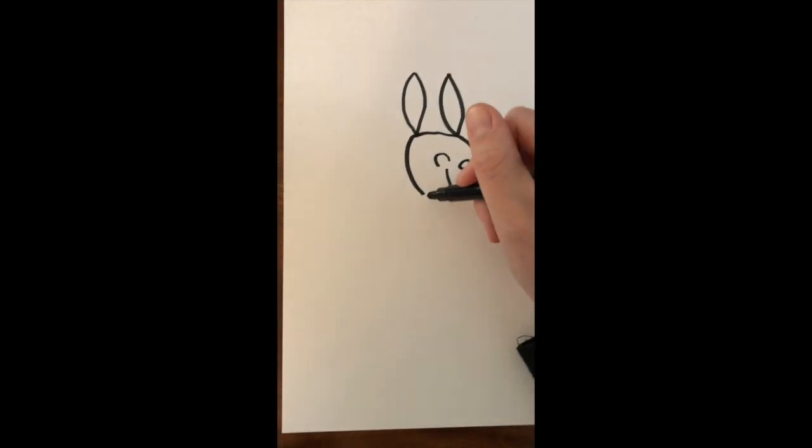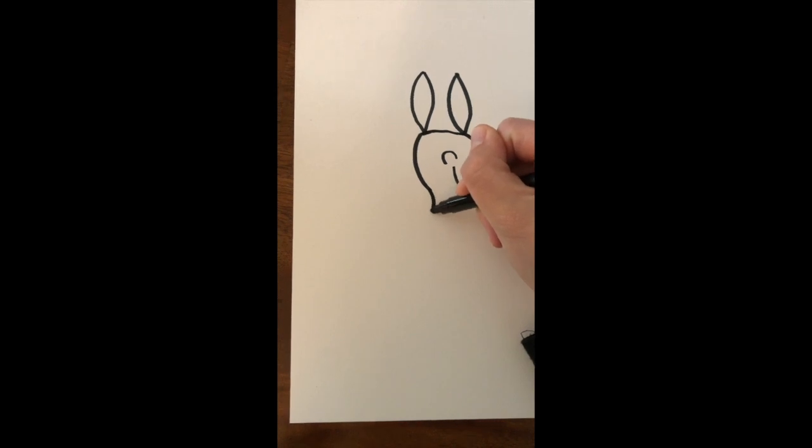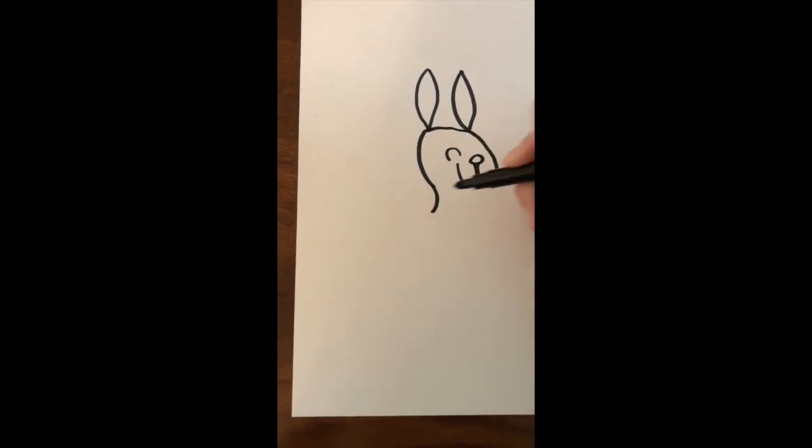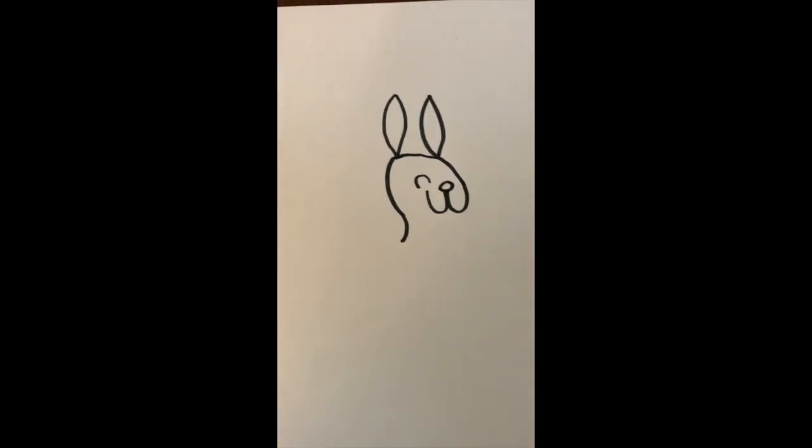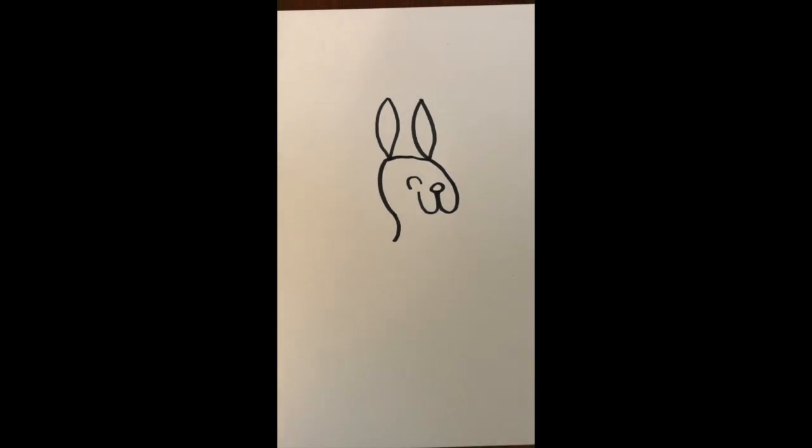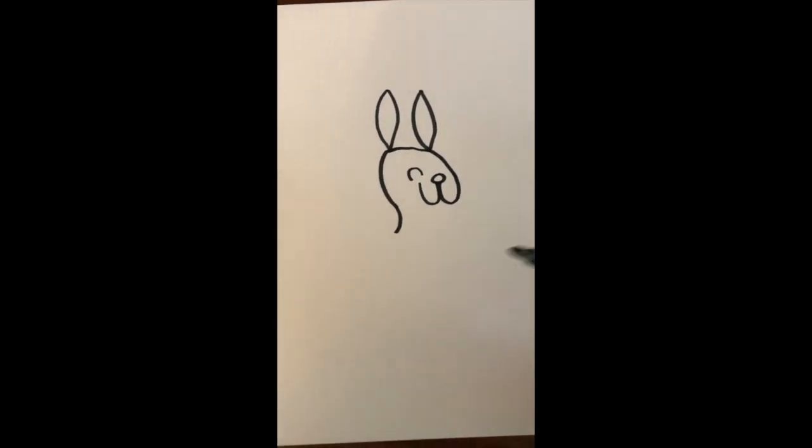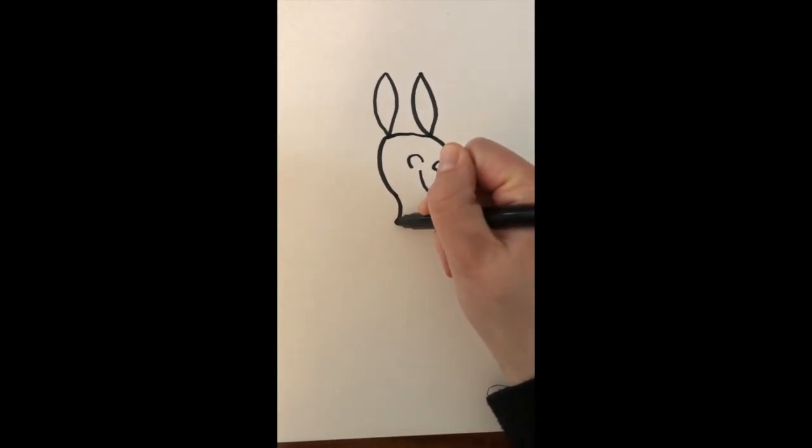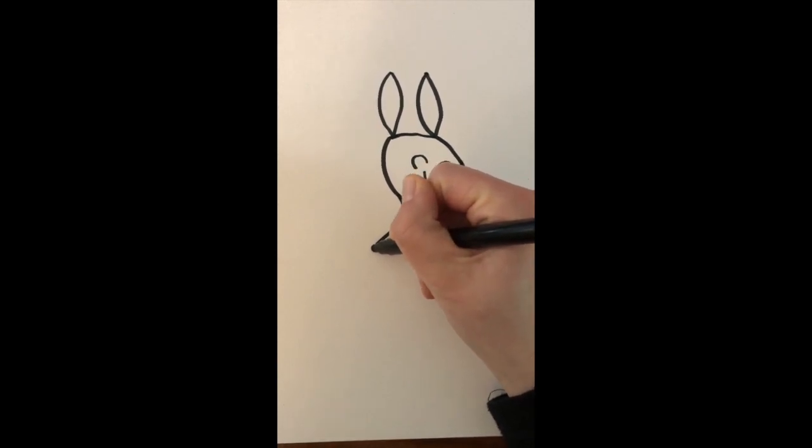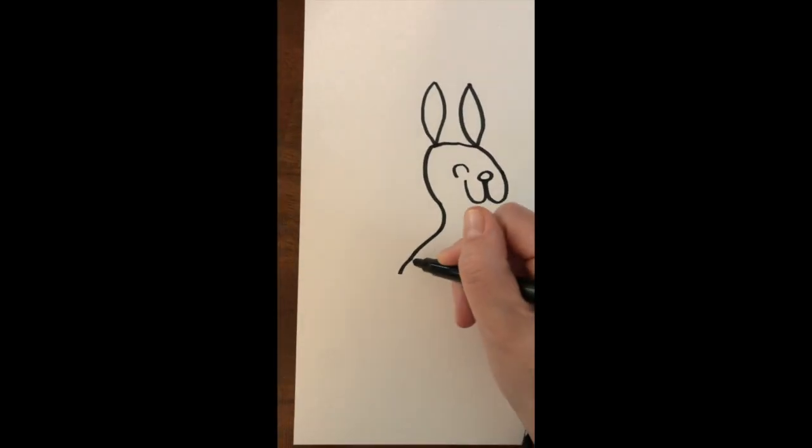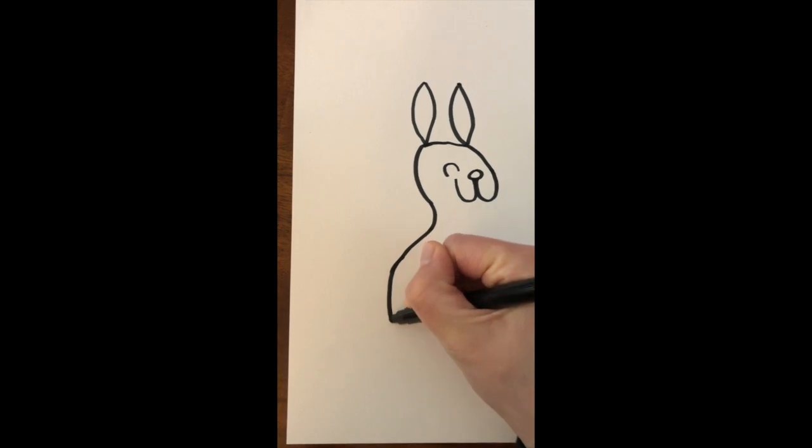When I'm done with that, I'm going to make a curve back out, just a little curve back out to make the neck of the bunny, and then curve it out big and down.